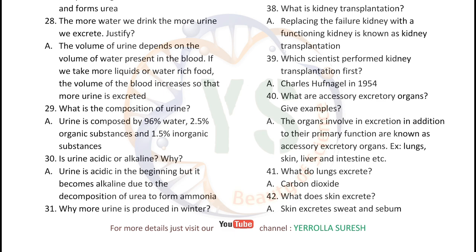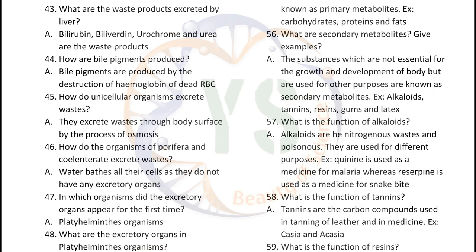What does the skin excrete? Skin excretes sweat and sebum. What are the waste products excreted by the liver? Bilirubin, biliverdin, urochrome, and urea are the waste products excreted by the liver. How are bile pigments produced? Bile pigments are produced by the destruction of hemoglobin of dead RBCs.